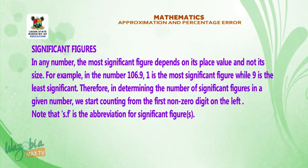Significant figures. In any number, the most significant figure depends on its place value and not its size. For example, in the number 106.9, 1 is the most significant figure, while 9 is the least significant. Therefore, in determining the number of significant figures in a given number, we start counting from the first non-zero digits on the left. Note that s.f is the abbreviation for significant figure or figures.